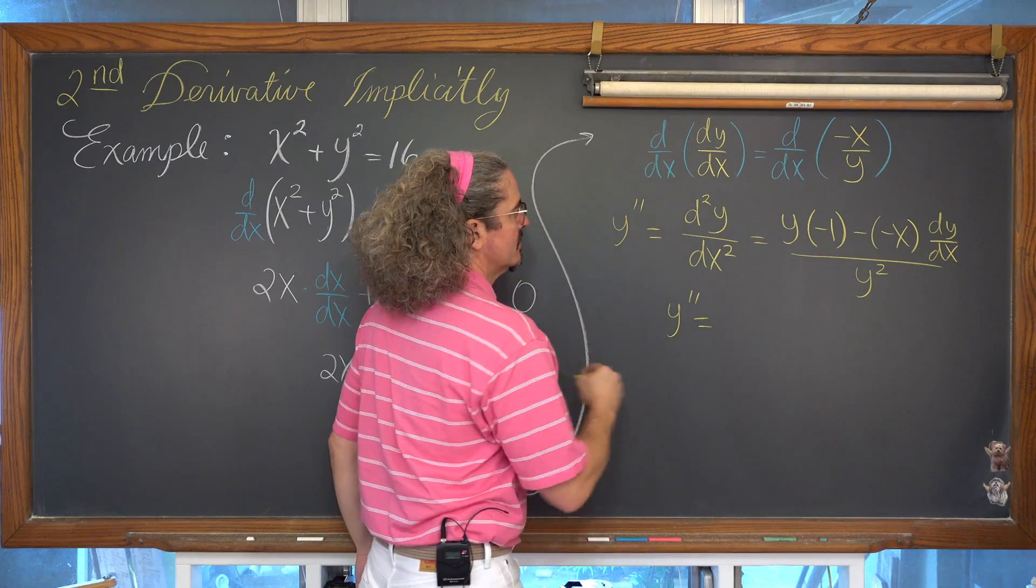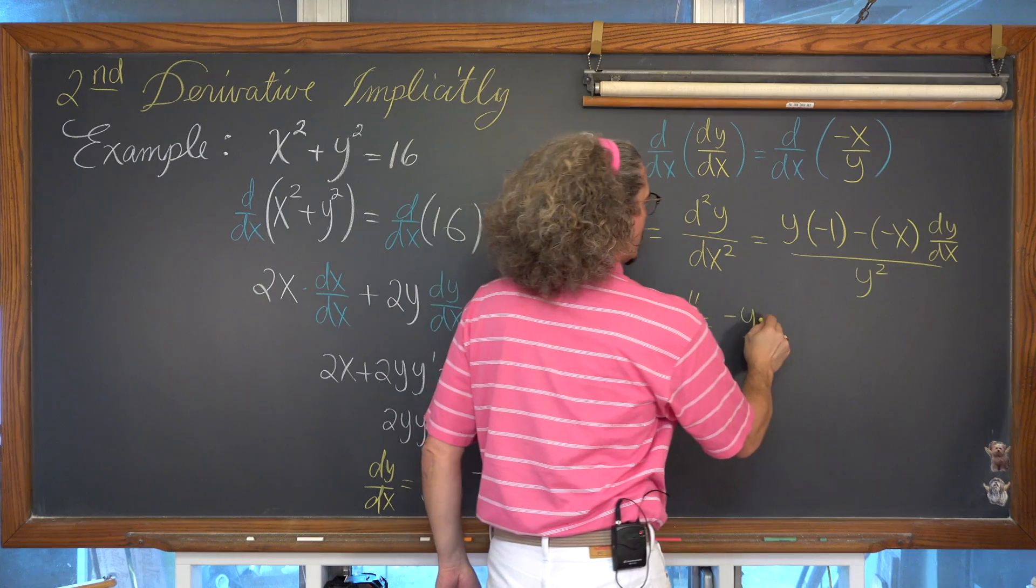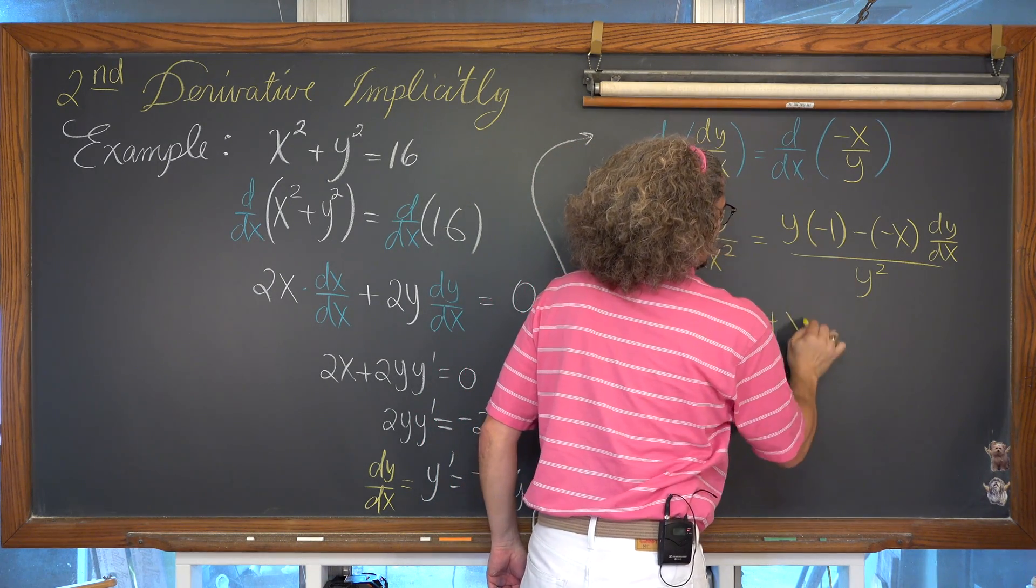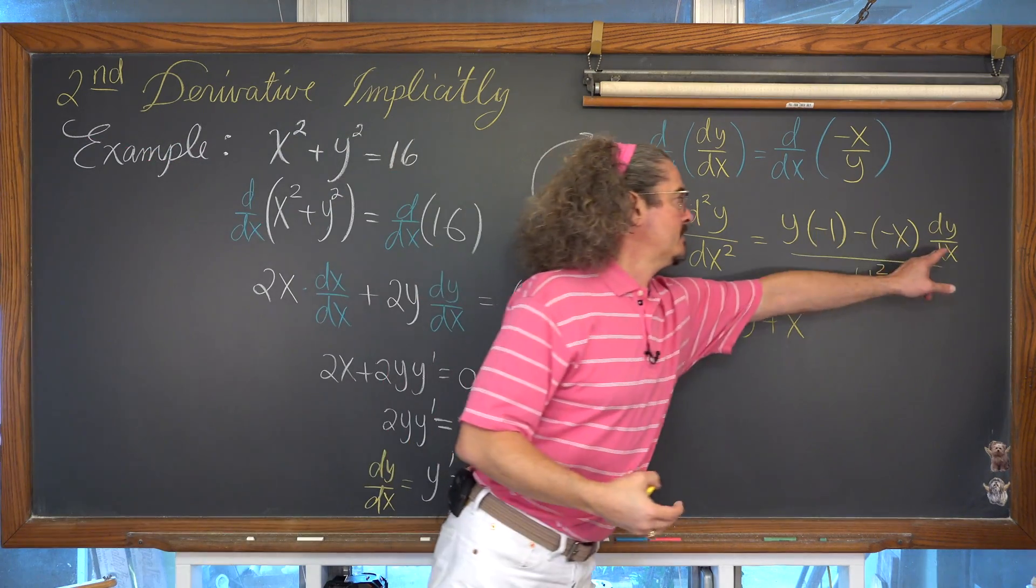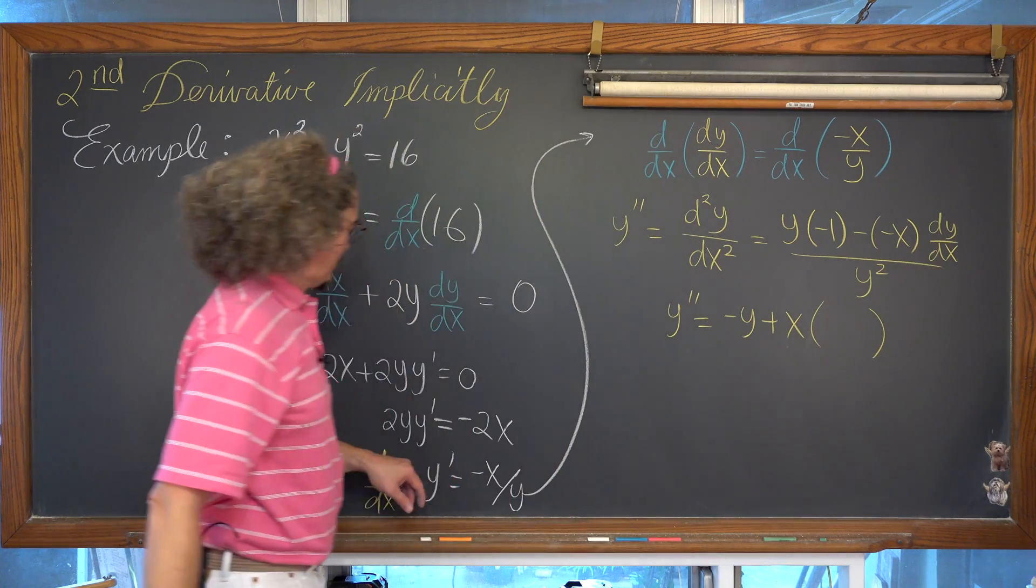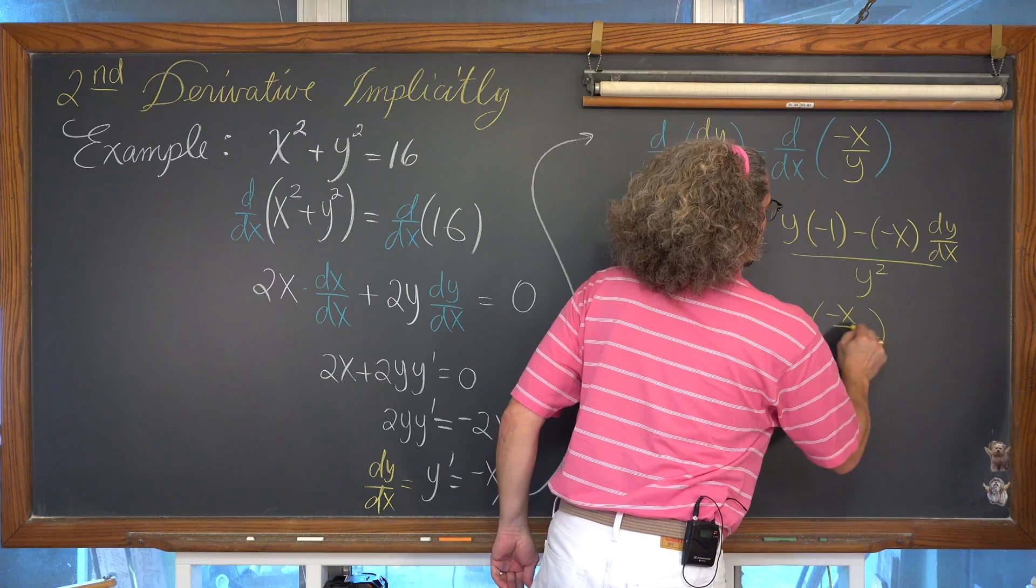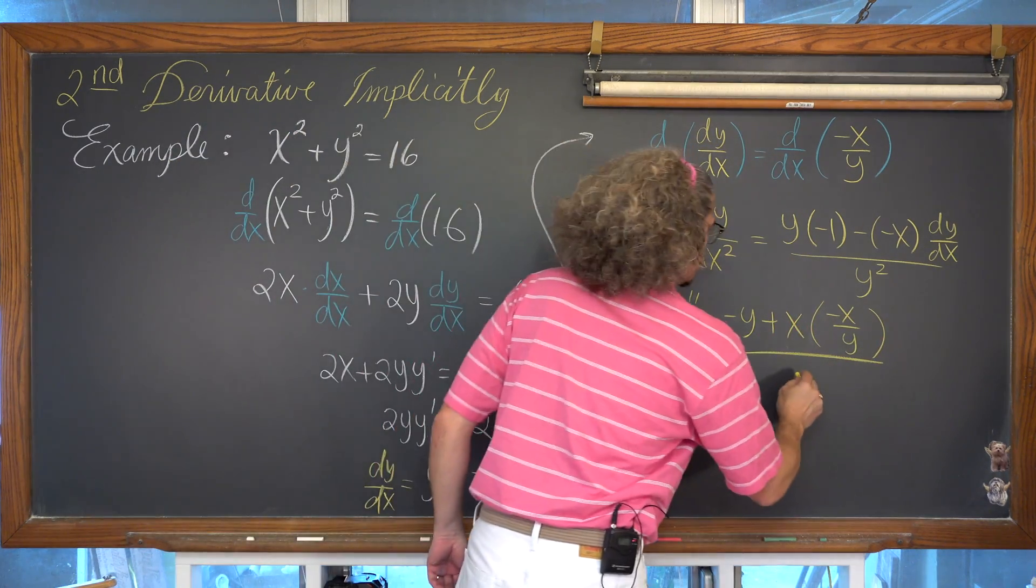So we have y double prime. I'm going to go back to that notation. We have a negative y. Negative times negative is positive. So negative y plus x. We're just going to do substitution. We're removing that notation of dy over dx or y prime and replacing it with what it's equal to, which is negative x over y. And then that is all over our denominator of y squared.